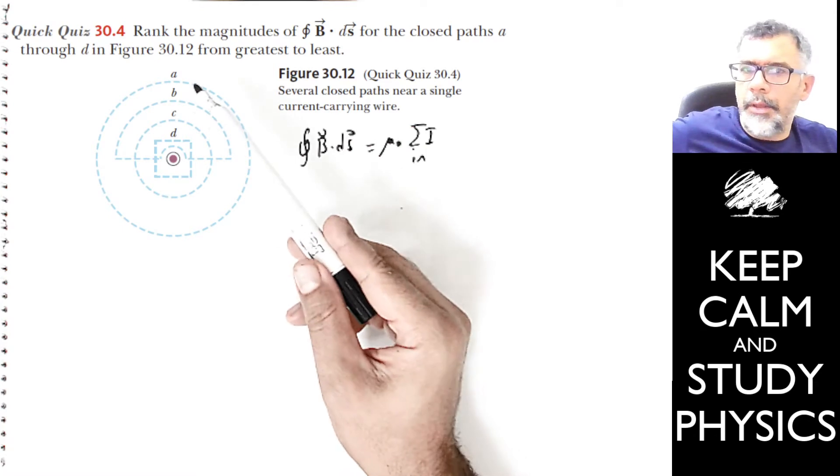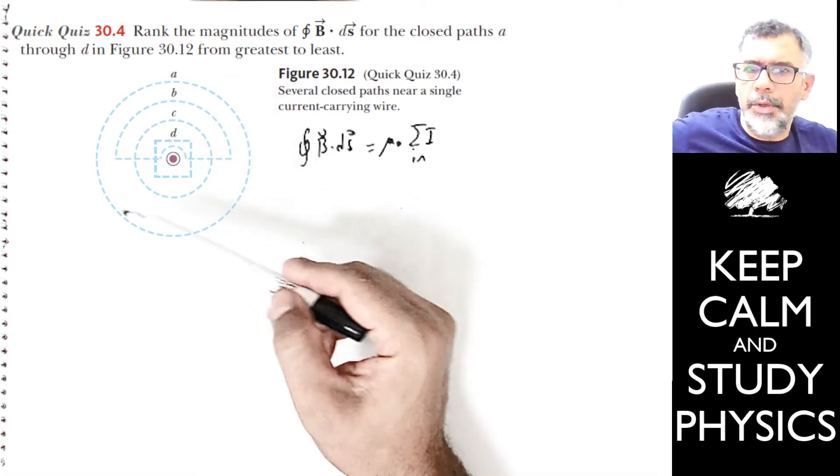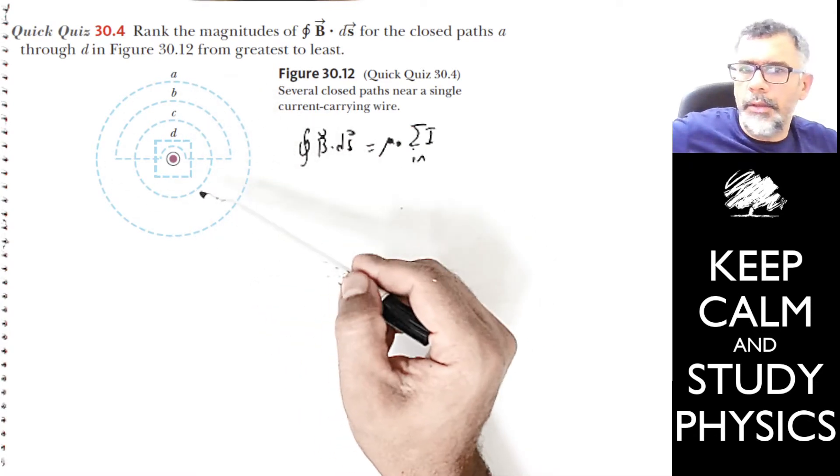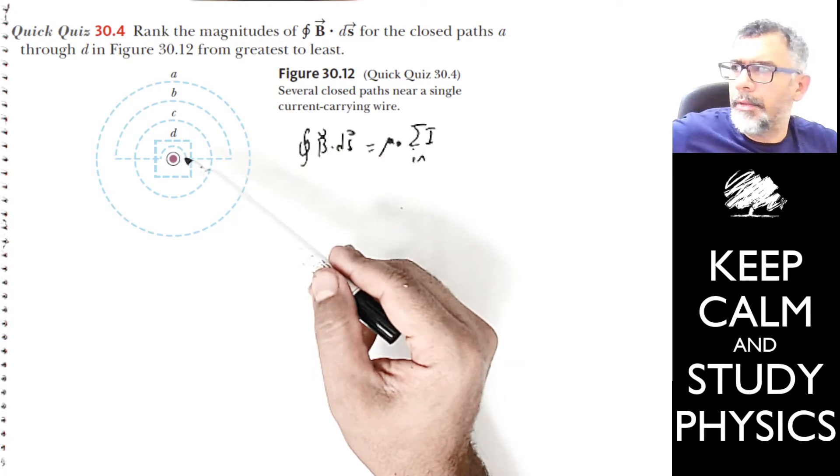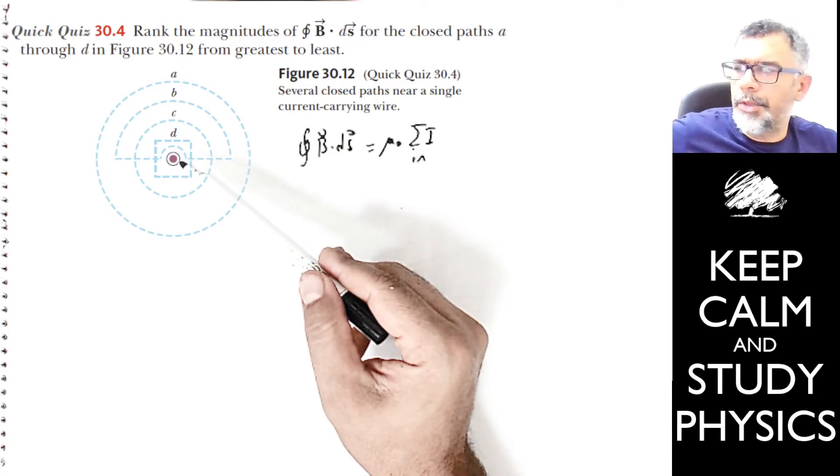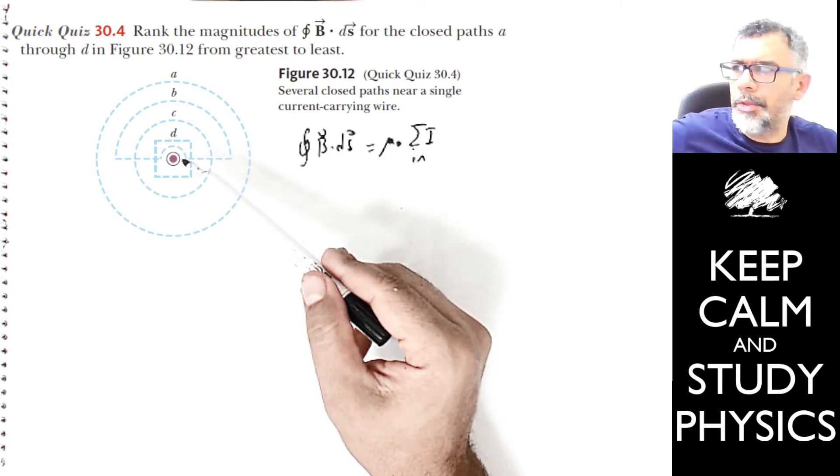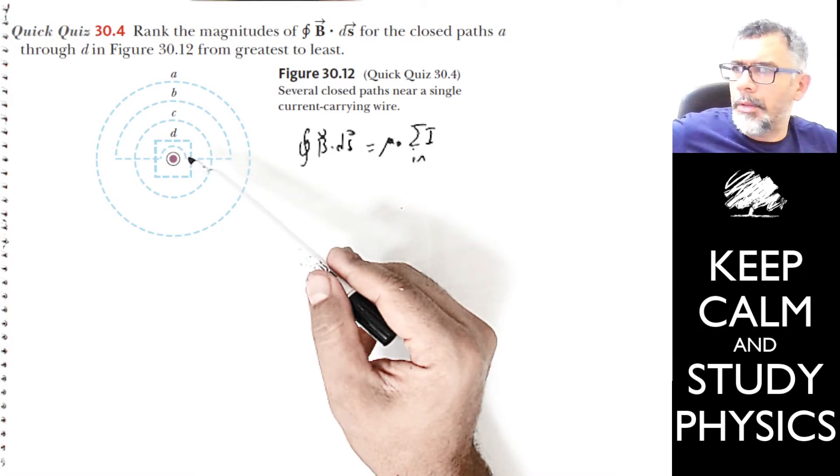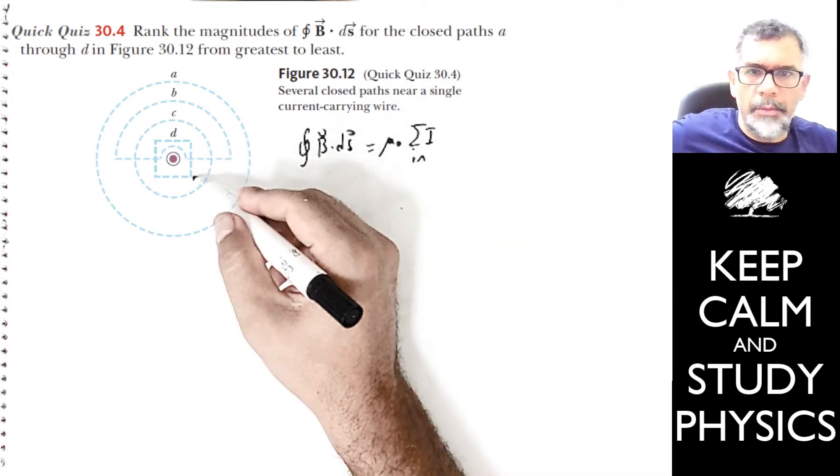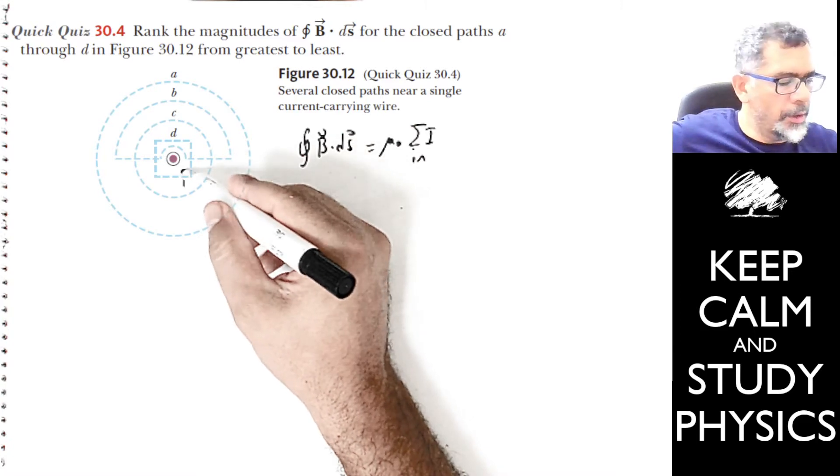We'll start with path A. A is a circle, and here we have a current into the page. We don't know the magnitude of this current, so let's call this current I.